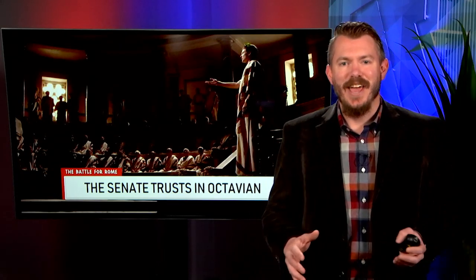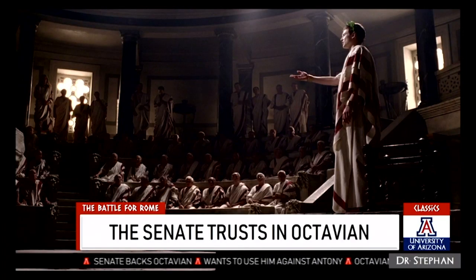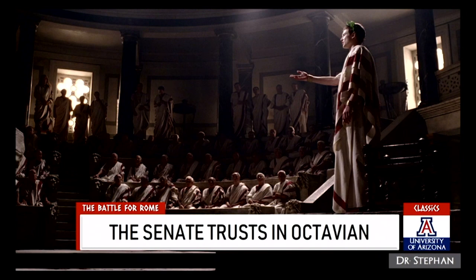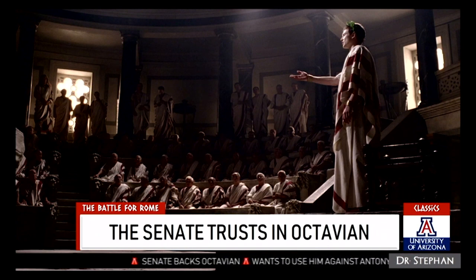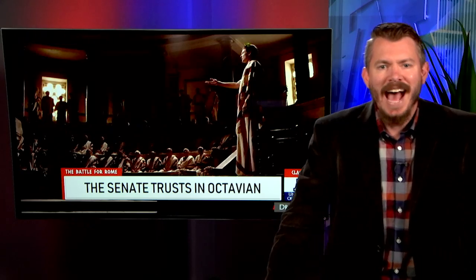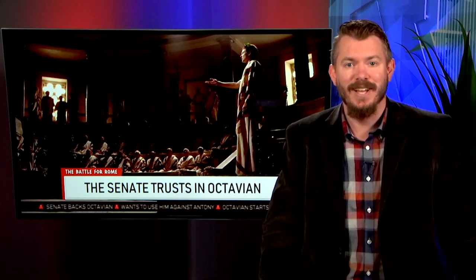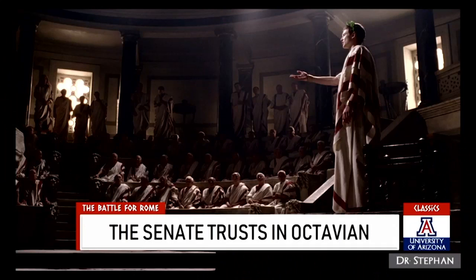The third player is the Roman Senate. They end up backing Octavian as the most prominent political ruler, believing Mark Antony poses the biggest threat because he's well versed with Caesar's legions and has the most military experience. They hope by backing Octavian they can get Antony out of the picture. At first, Octavian plays along and is Senate-friendly. But as he settles into power, he flips — he takes control of the treasury and rescinds the amnesty given to the assassins of Julius Caesar, making them once again liable for the assassination.